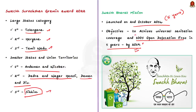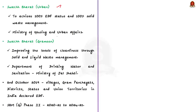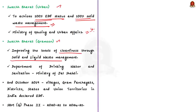The mission had two components: Swachh Bharat Urban and Swachh Bharat Gramin. The aim of Swachh Bharat Urban was to make urban India open defecation free, achieving 100% ODF status and 100% solid waste management in all urban local bodies. It was implemented by the Union Ministry of Housing and Urban Affairs. The second component, Swachh Bharat Gramin, focused on rural India, aiming at improving cleanliness through solid and liquid waste management activities and making villages open defecation free.